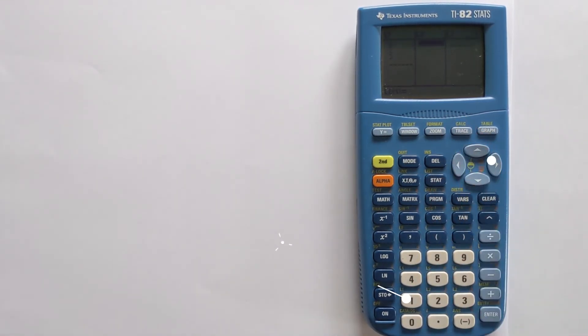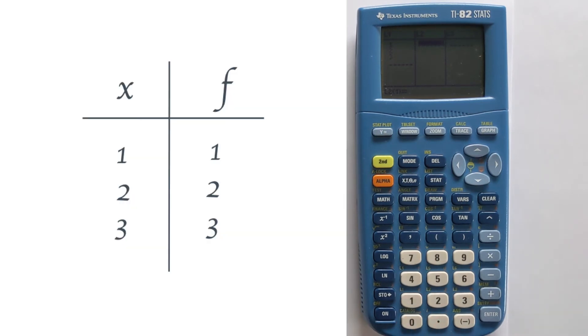L2 is where we're going to put the frequency data. Let's just imagine we've got a really simple example. We've got our X data, 1, 2, 3, and our frequency is just 1, 2, and 3 for each of those. So let's enter that in L2: 1, 2, 3. That's that entered there.